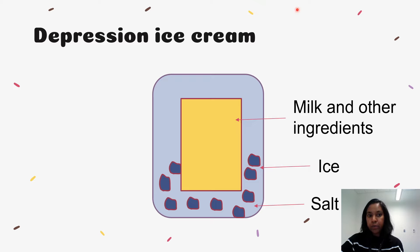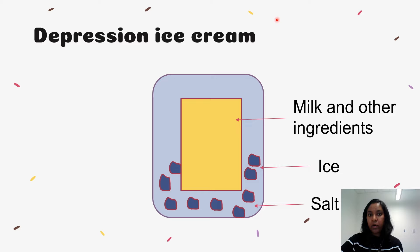Usually, pure water freezes at zero degrees Celsius. If we add salt, it lowers the freezing point by a few degrees. This means when salt is added to the ice in the outer bag, the ice is above its freezing point, so it starts melting.